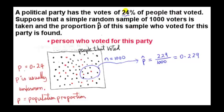Obviously we're not going to get 24% each time, but we would expect to get a value for P hat that's in or around 24%.